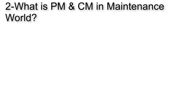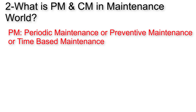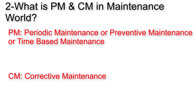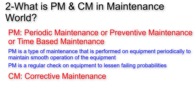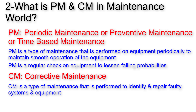The next question is: what is PM and CM in the maintenance world? PM stands for Periodic Maintenance, and CM stands for Corrective Maintenance. Preventive Maintenance, also called Periodic or Time-based Maintenance, is performed on equipment periodically to maintain smooth operation — it's a regular check to lessen the probability of failure. Corrective Maintenance is performed to identify and repair faulty systems and equipment. As preventive maintenance is done well, the chances of needing corrective maintenance decrease.